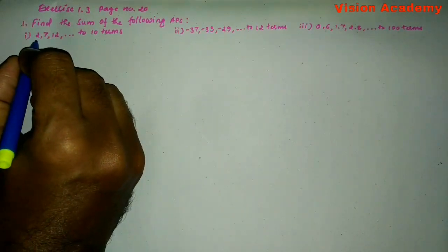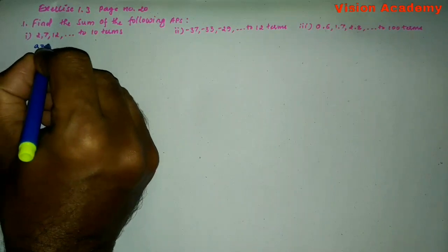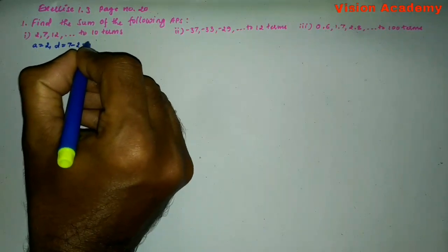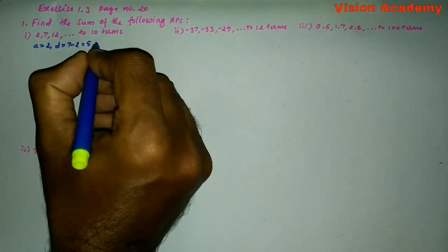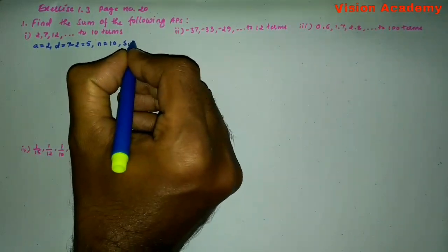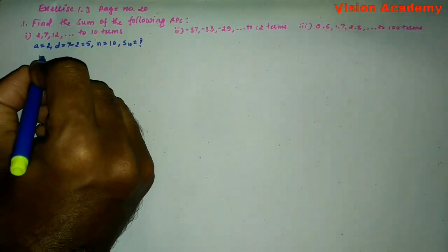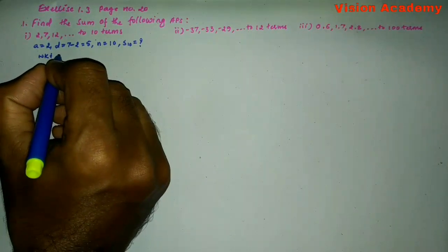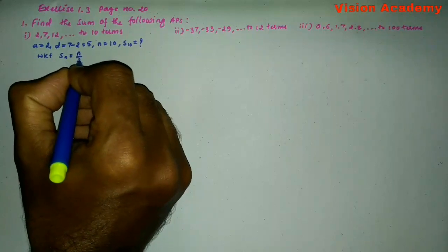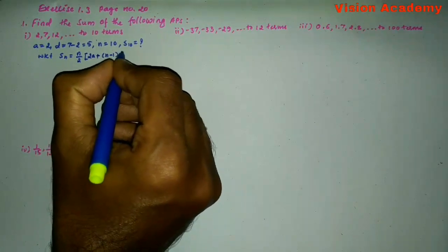So, let us find the solution for the given problem. Here, A is equal to 2, and common difference D is equal to 7 minus 2, which is equal to 5. And N is given as 10 terms. We need to find the sum of first 10 terms. We know that S_N is equal to N divided by 2, into 2A plus N minus 1 into D.